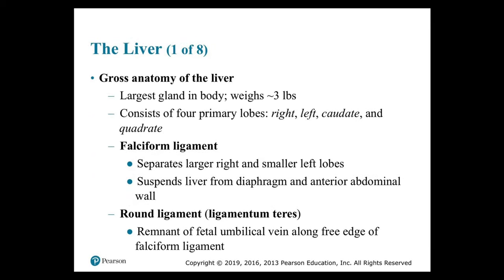Gross anatomy of the liver: it is the largest gland in the body, weighing about three pounds, and consists of four primary lobes — right, left, caudate, and quadrate. The falciform ligament separates the larger right and smaller left lobes and suspends the liver from the diaphragm and anterior abdominal wall. The round ligament (ligamentum teres) is a remnant of the fetal umbilical vein along the free edge of the falciform ligament.